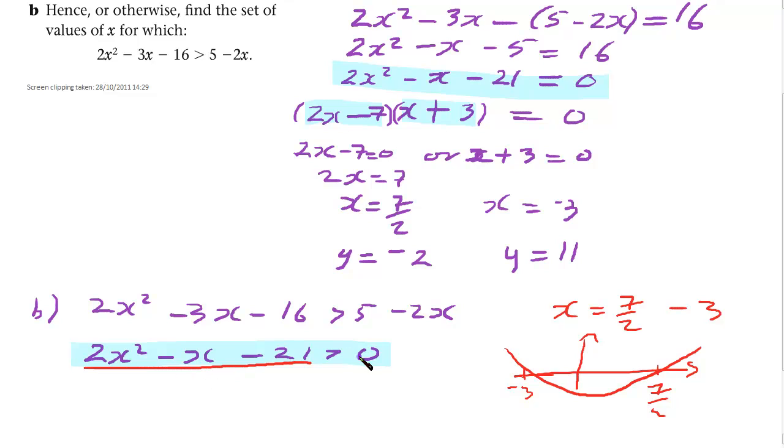And we want to see when it's greater than 0. Well, when the y value of all of this, when all of this is greater than 0, the y value of this will be greater than 0. So it's going to be on this section and this section. So we can see that we need to be to that side of 7 over 2 and that side of minus 3. So therefore, x is less than minus 3 or x is bigger than 7 over 2.